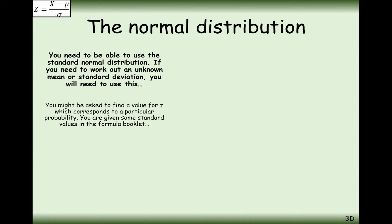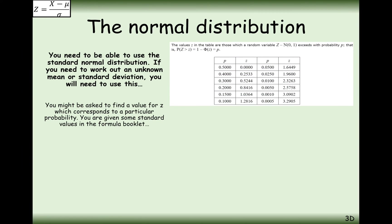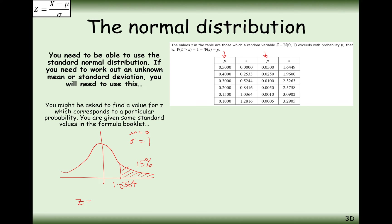You might be asked to find a value for z which corresponds to a particular probability. You are given some standard values in the formula booklet — I've screen-shotted it straight from the formula booklet. On the left-hand column you're given exact probabilities upwards on the standard normal distribution. So if the mean is 0 and standard deviation is 1, you're given the z values that correspond to an exact probability. For example, for 15% on this side, the corresponding z value is 1.0364, which would then let you work out your x value using x minus mu divided by sigma.